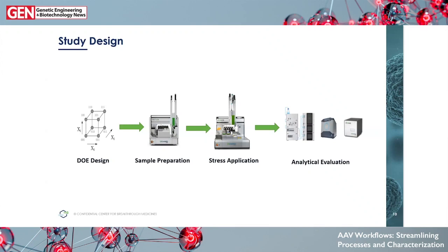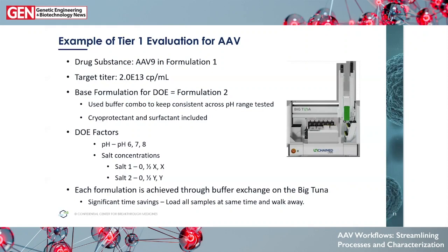For study design, we start with the DOE design to develop your formulations. Once you have your formulations decided, you use BigTuna for sample preparation and buffer exchange — this allows us to keep the high concentration AAV that we need and do it efficiently, processing all formulations at the same time. From there, you move to Junior to apply your stress for force degradation studies, and finally move into analytical evaluation. One technique I'll focus on is the Stunner from Unchained Labs.